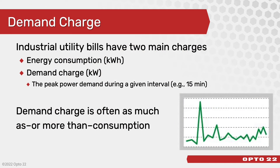Let's take a minute to talk about the energy bill. For medium and large industrial customers there are typically two components. One is consumption in kilowatt hours — that's the amount of energy used during the billing period. The other, which many people are unaware of, is called demand charge. That is a tariff applied to the peak power in kilowatts used during the month. It's usually measured in 15-minute intervals, and that highest value is taken and applied to the whole month. That demand charge is often as much as or even more than the consumption charge.